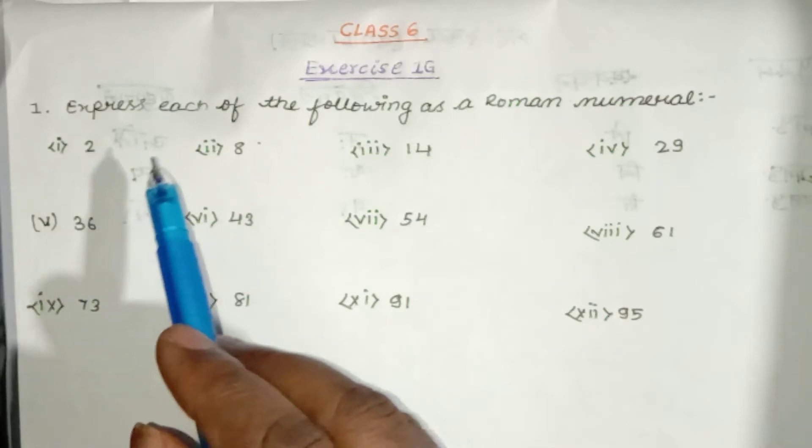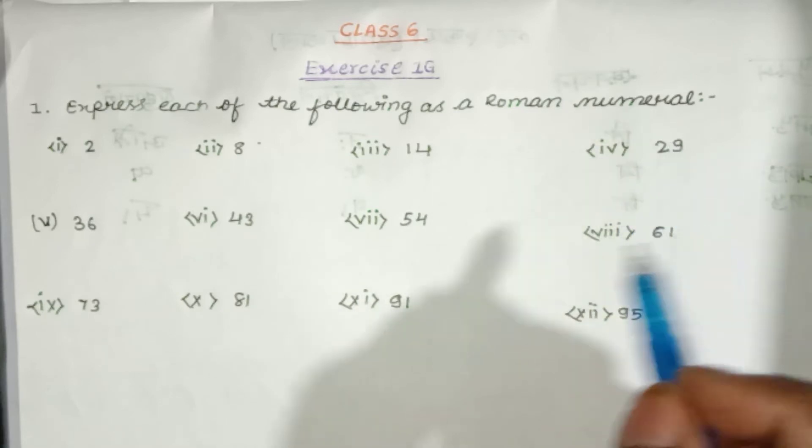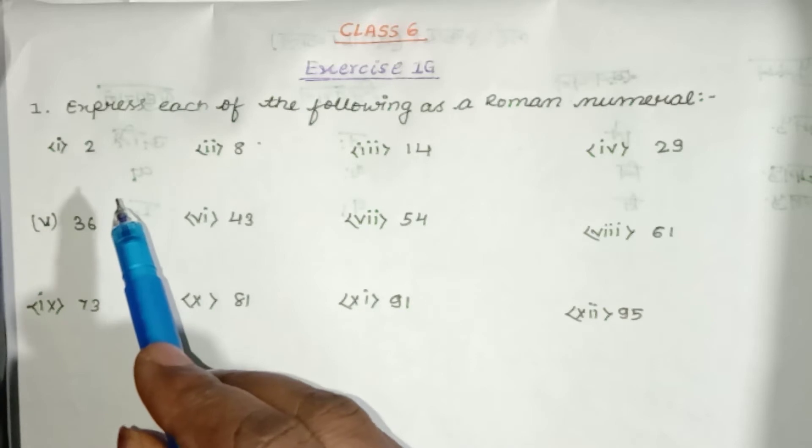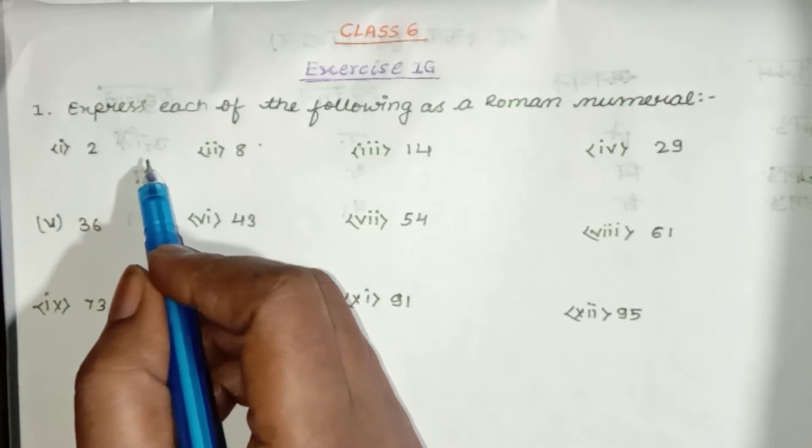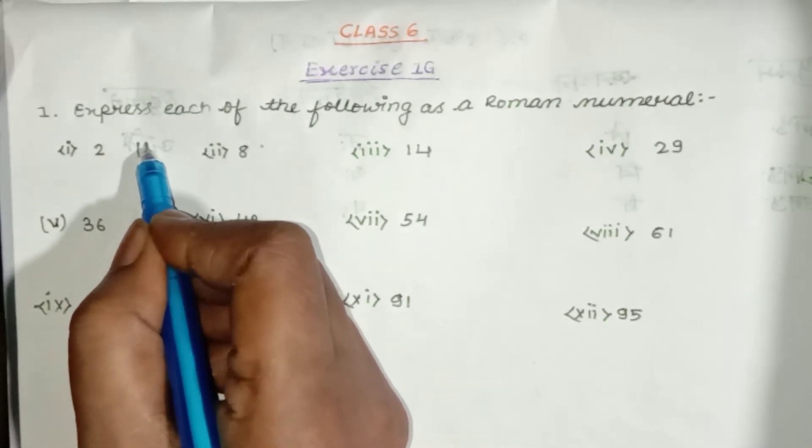The question is, express each of the following as a Roman numeral. First is 2. We have to write 2 in Roman numeral. So we will write it like this.